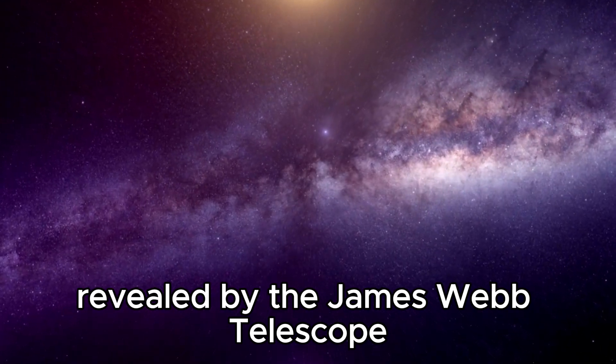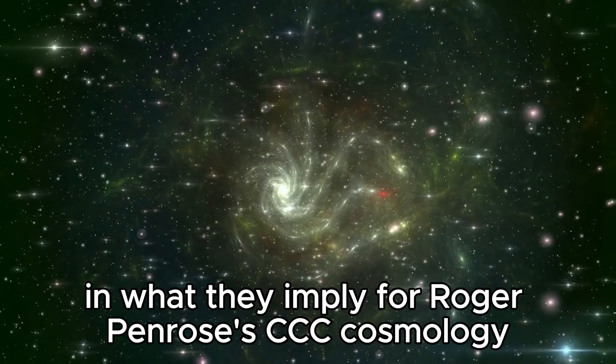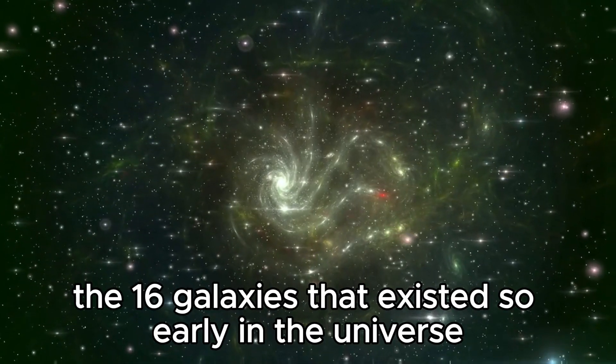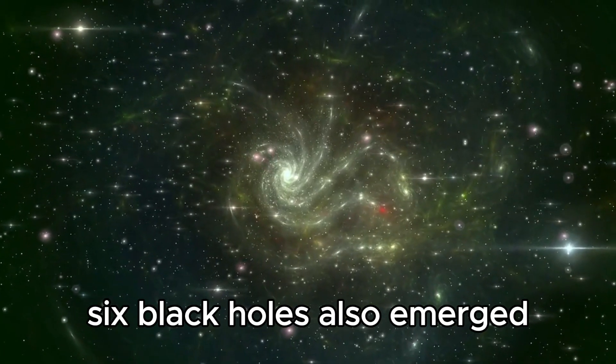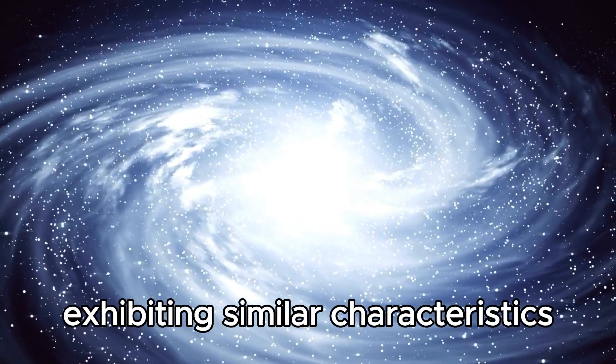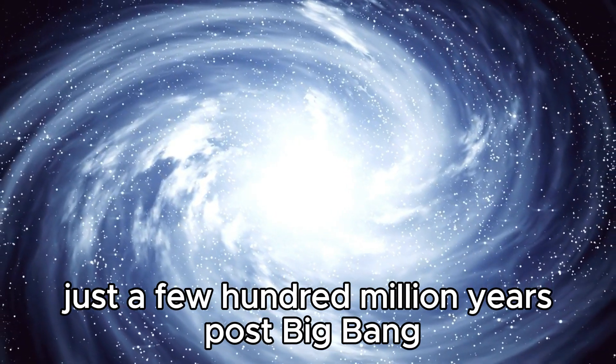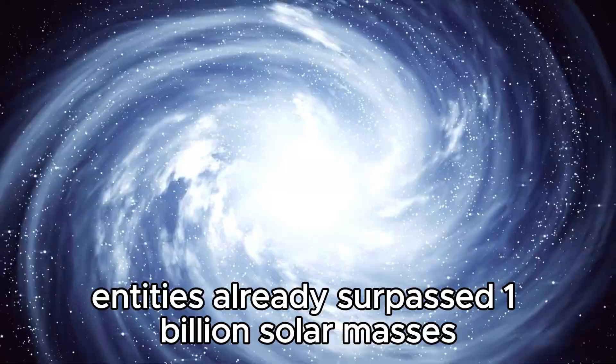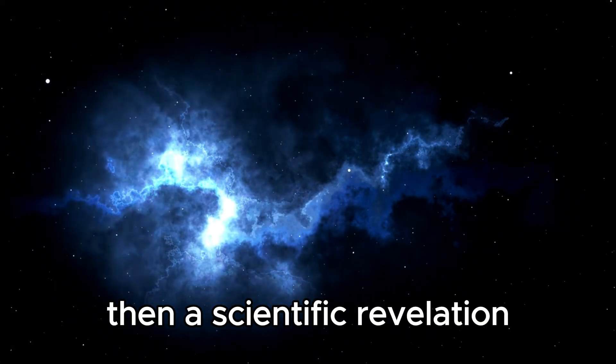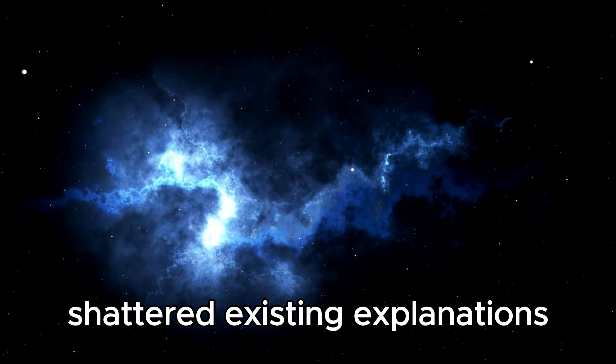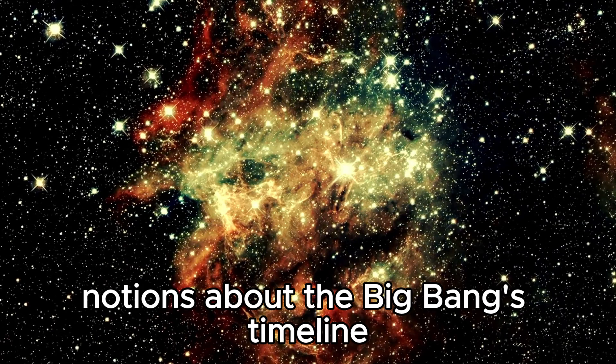Let's delve into the surprises revealed by the James Webb Telescope and what they imply for Roger Penrose's CCC cosmology. Alongside the 16 galaxies that existed so early in the universe that they must precede the Big Bang, six black holes also emerged, exhibiting similar characteristics just a few hundred million years post-Big Bang. These colossal entities already surpassed one billion solar masses. Then, a scientific revelation shattered existing explanations. The discovery challenges previous notions about the Big Bang's timeline.